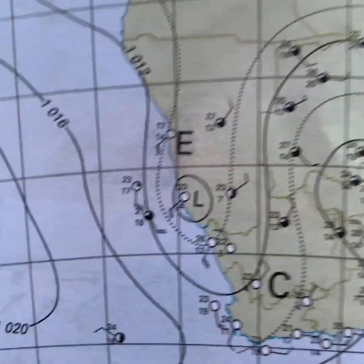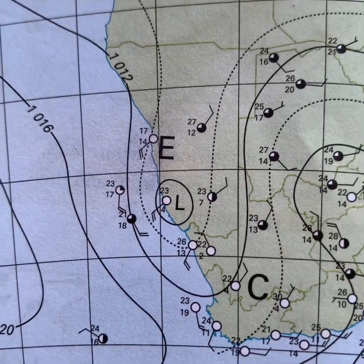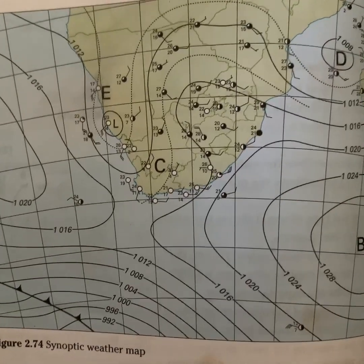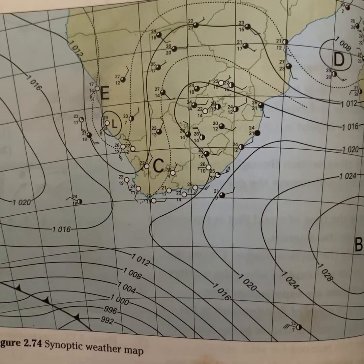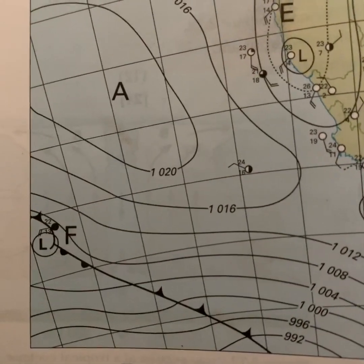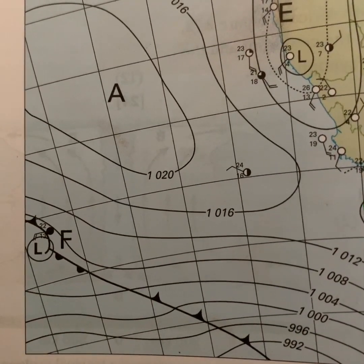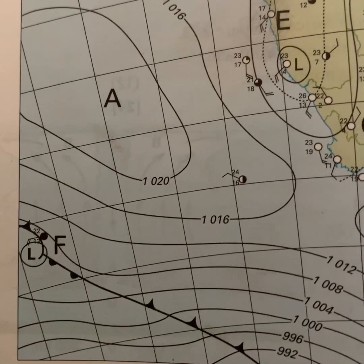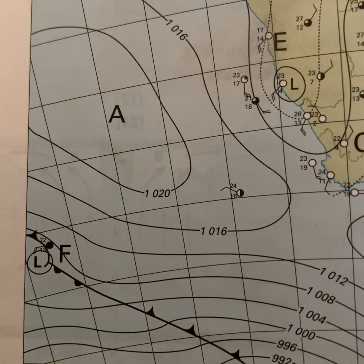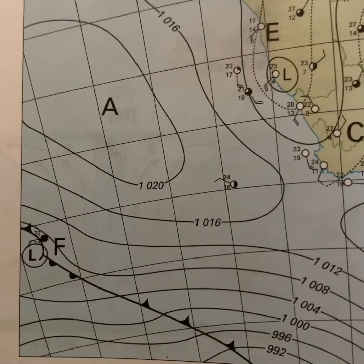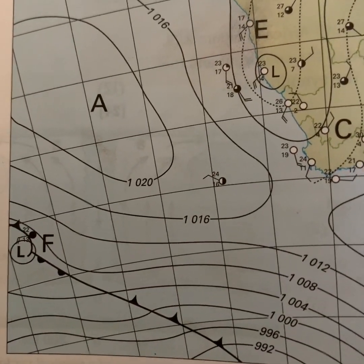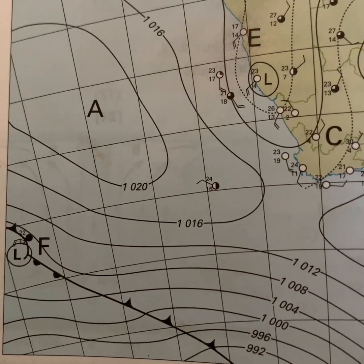The next question says: identify the type of pressure system at F. Going to F on the map, you can see there are triangles and half-circles, and there's a low pressure system. If it's a low pressure with those features, it definitely has to be a mid-latitude cyclone.